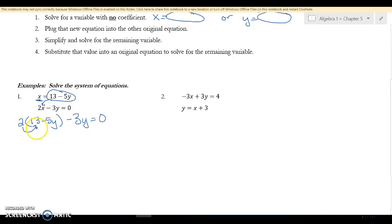So 2 times 13 is 26, 2 times 5 is 10, and since it's a negative I bring it down. I'm gonna combine my terms, so I get 26 minus 13Y is 0. I'm going to move my 26.